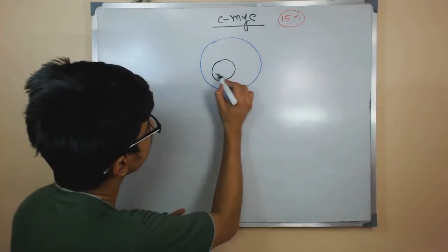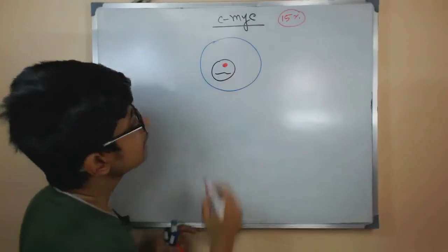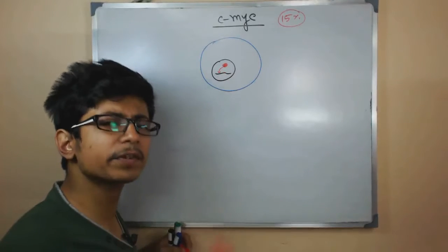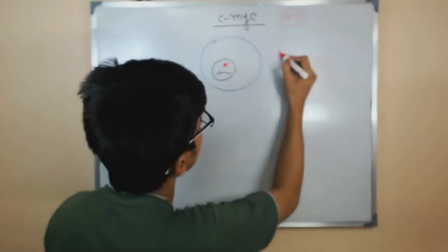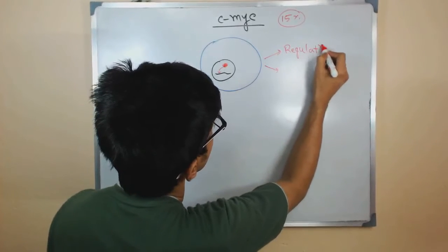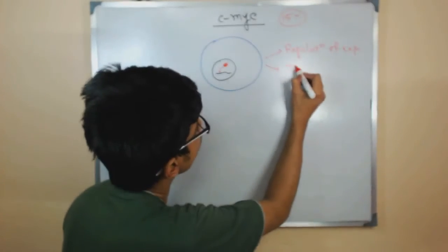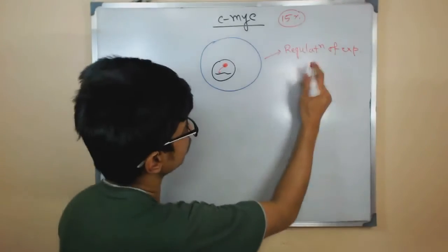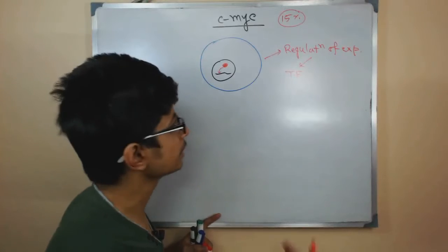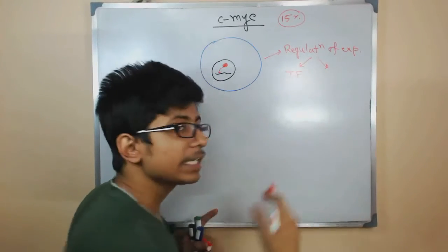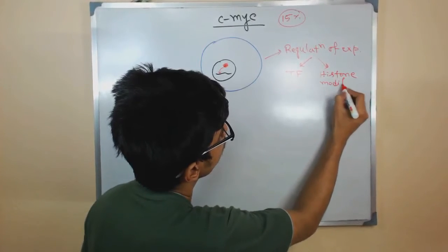c-MYC can go and sit on certain gene promoters inside the nucleus. It has two different types of functions related to the regulation of gene expression. One is acting as a transcription factor, which can directly bind to the promoter and transcribe certain genes. The other is acting as a histone modifier.